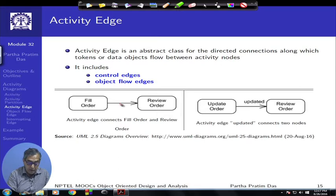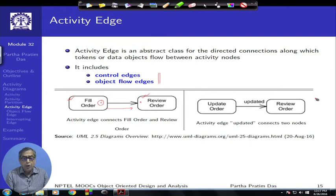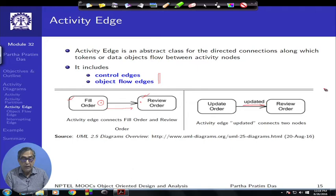Activities have edges. For example, there is a fill order activity and a review order activity with a directed edge between them, showing that from the final node of one activity to the initial node of the other there is a flow. These edges are typically control edges or object flow edges — where objects or tokens can also flow from one activity to another. Edges can also have annotations describing the effect of traversing that edge.